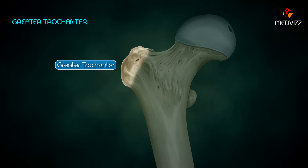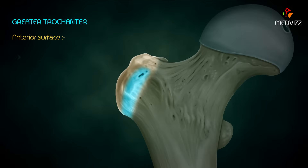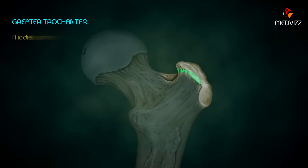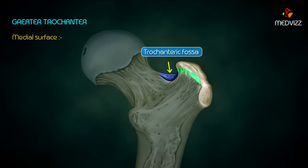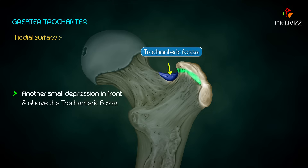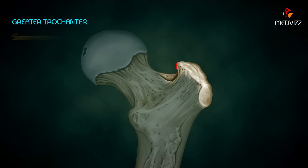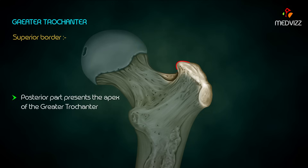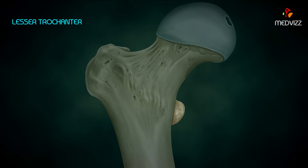The greater trochanter is a large prominence that projects up from the junction between the neck and the shaft. It has three surfaces and one border: the anterior surface is rough; the lateral surface has an oblique ridge; the medial surface presents with the trochanteric fossa, a depression at the posterior inferior part, and another small depression in front and above it. The superior border's posterior part presents the apex of the greater trochanter.